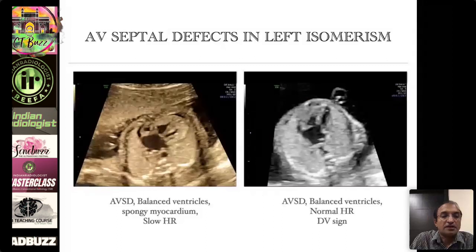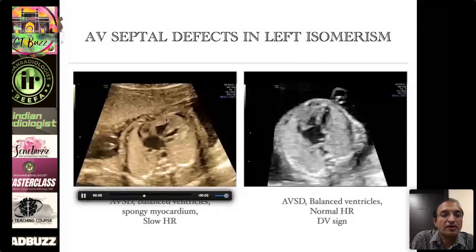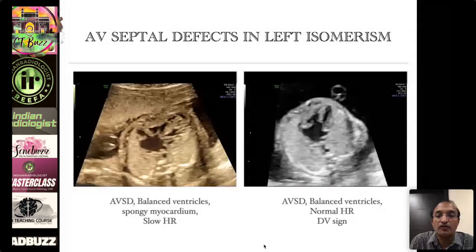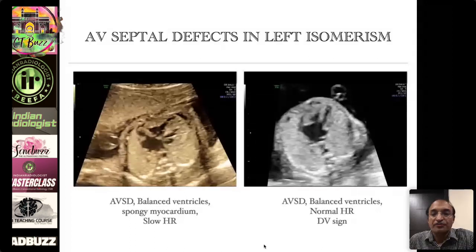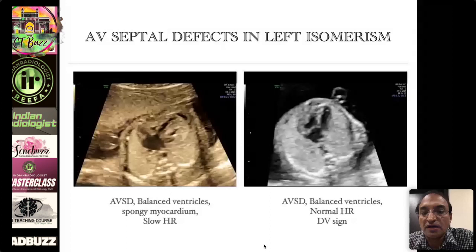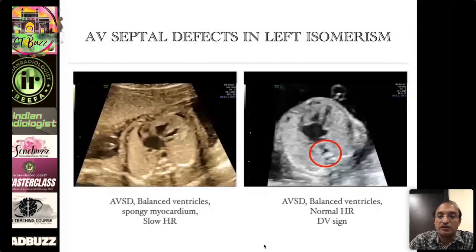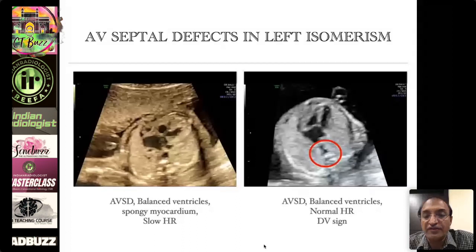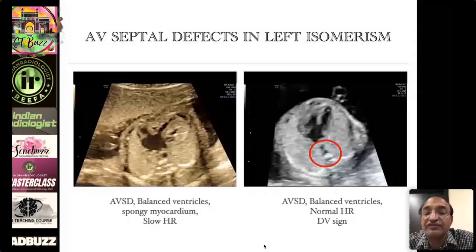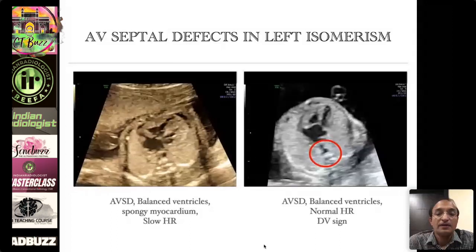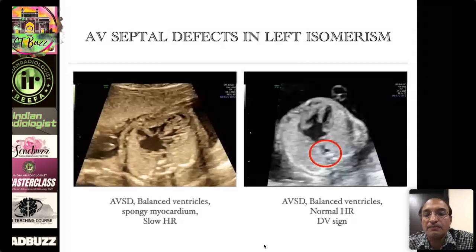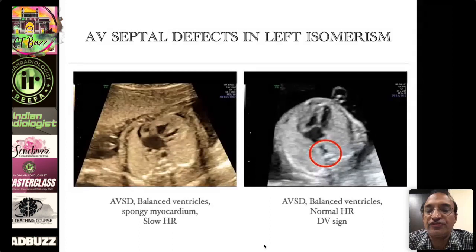This is another type of AV septal defect — you see two good-sized ventricles, but notice how slow the heart rate is. This is typically the type found in left isomerism, often associated with complete heart block. On the other image you see a very interesting finding: two vessels instead of one where the descending aorta is — this is called the double vessel sign. One is the aorta and the second is a dilated azygos vein, because the inferior vena cava is interrupted. This is the hallmark of left isomerism, and the double vessel sign immediately points you to a diagnosis of left isomerism or heterotaxy.